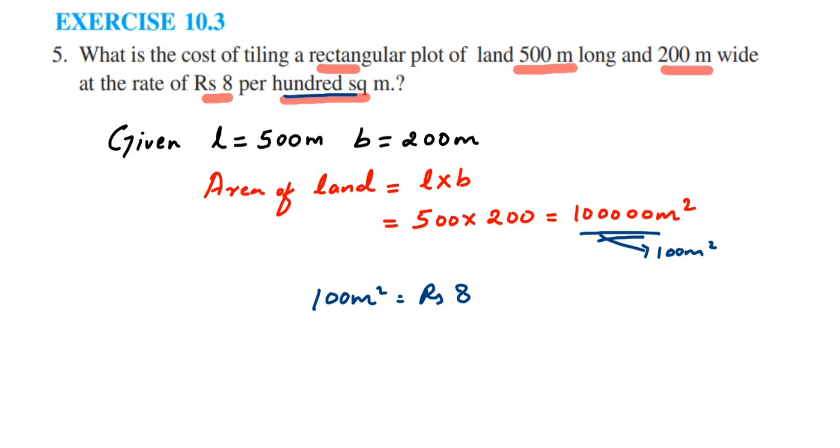So we are going to find out how many hundreds are there in 1 lakh. We are going to divide it. So therefore cost of tiling will be equal to 1 lakh divided by 100, and after dividing we are going to multiply with 8 because that is the cost.